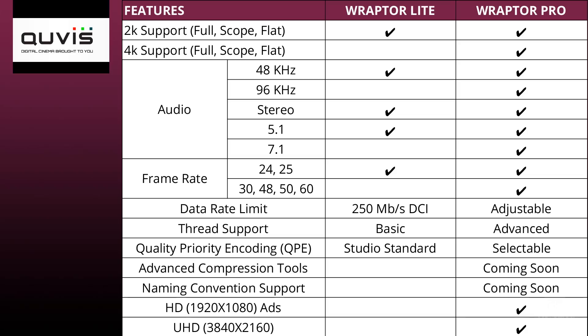Let's look at the comparison table for what is and isn't supported between the 2K version built in and the 4K version at extra cost. Raptor Lite is the 2K version that comes with Premiere Pro. Both Raptor Lite and Pro support 2K; 4K is only in the Pro version. For audio, 48K is supported in both, while 96 kHz is Pro only. Both support stereo and 5.1; 7.1 requires Pro. For frame rates, out of the box you get 24 and 25 fps; Pro adds 30, 48, 50, and 60 fps.